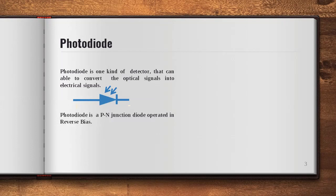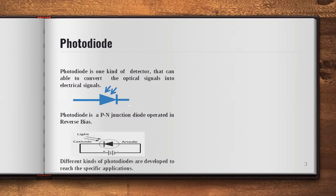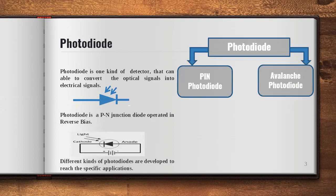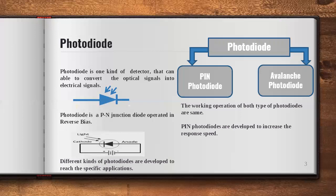In this video, I am going to explain the benefits of PIN and avalanche photodiode when compared with the PN junction photodiode. Based on the specific application, PIN and avalanche photodiodes are designed. PIN is designed for high response speed and avalanche is designed for high sensitivity.